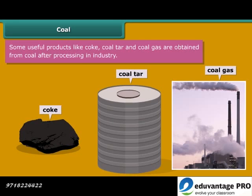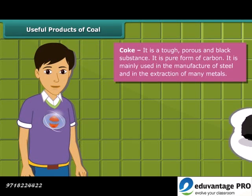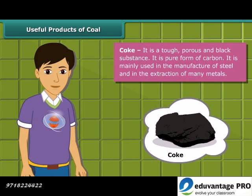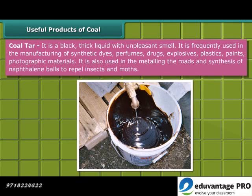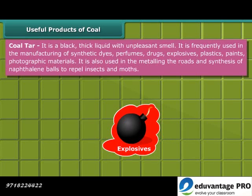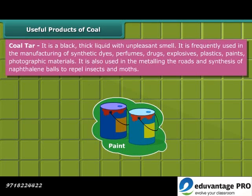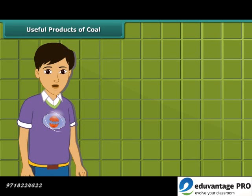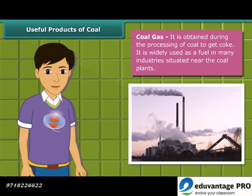Do you know how these by-products are helpful for us? First, let us know about coke. Coke is a tough, porous and black-colored substance mainly used in the manufacturing of steel and extraction of many metals. Coal tar is a black, thick liquid with an unpleasant smell, frequently used for manufacturing synthetic dyes, perfumes, drugs, explosives, paints, plastics and photographic materials. When coke is obtained from coal, coal gas is also produced. In many industries located near coal plants, it is used as a fuel.